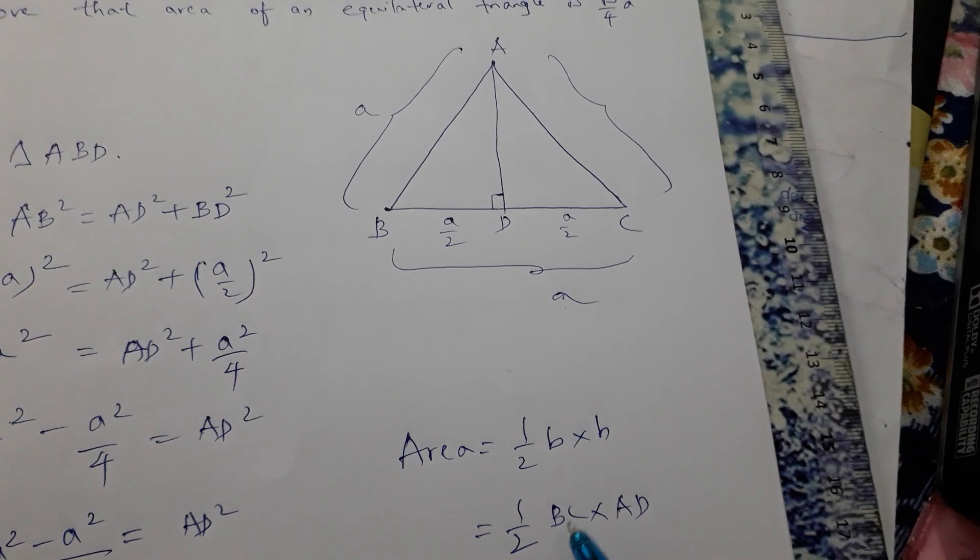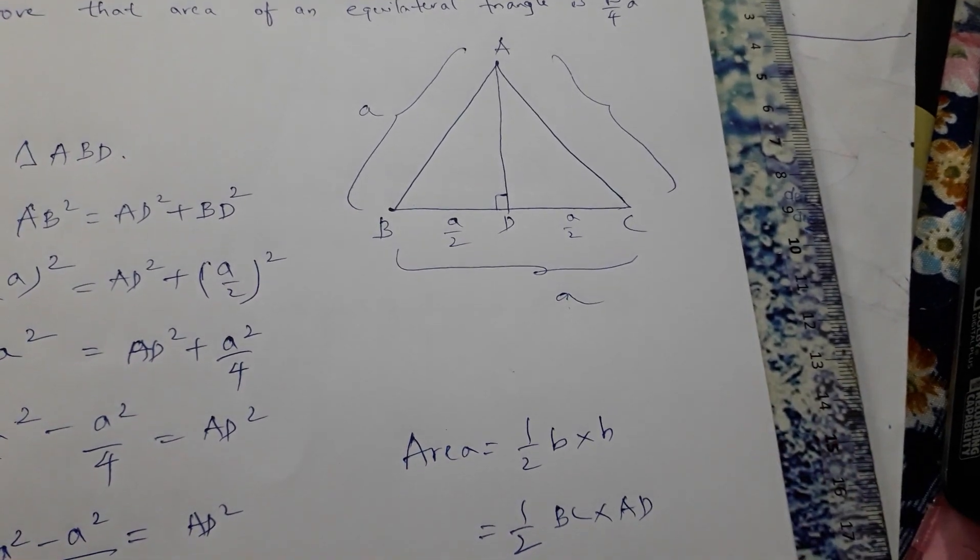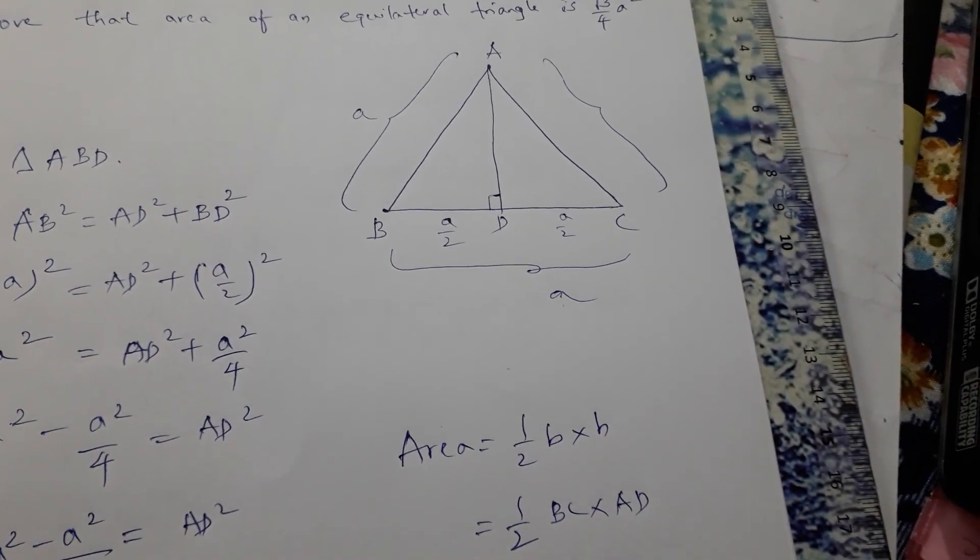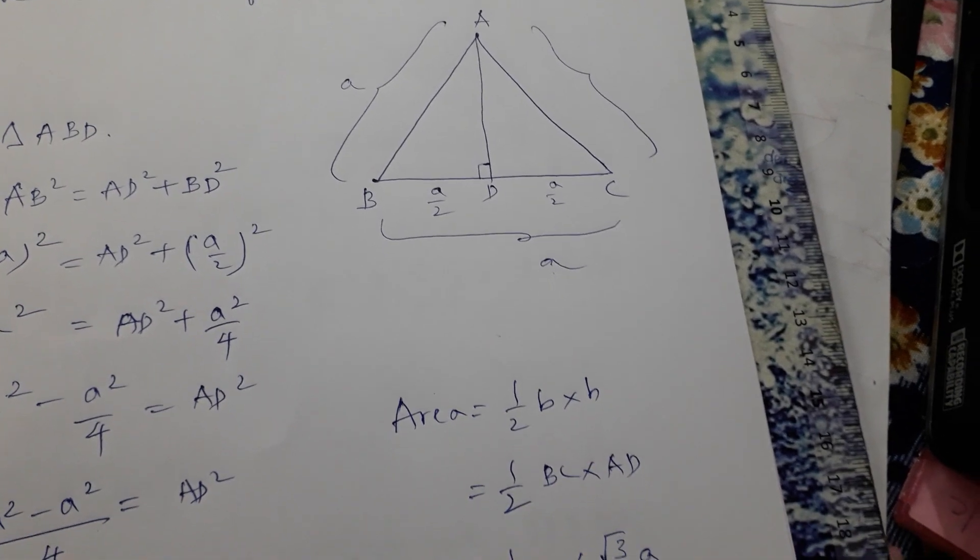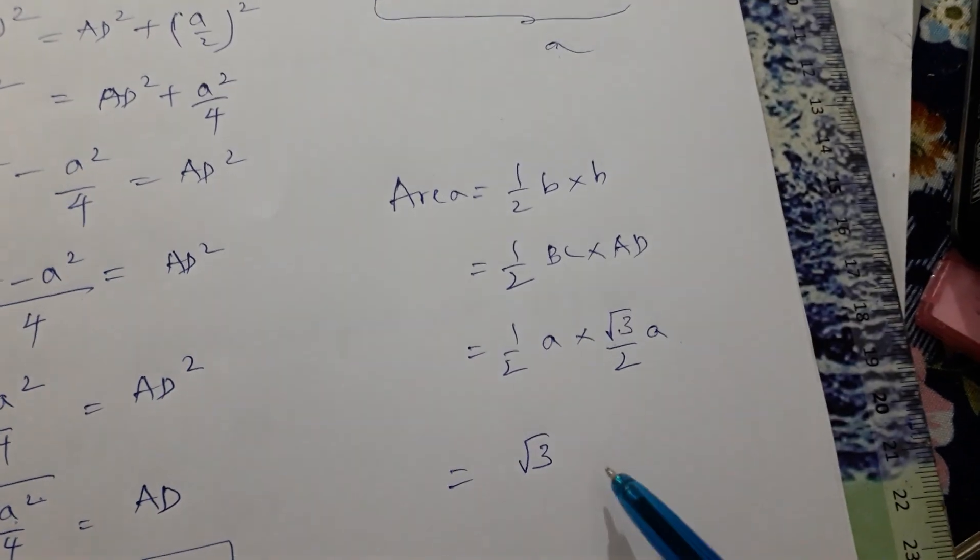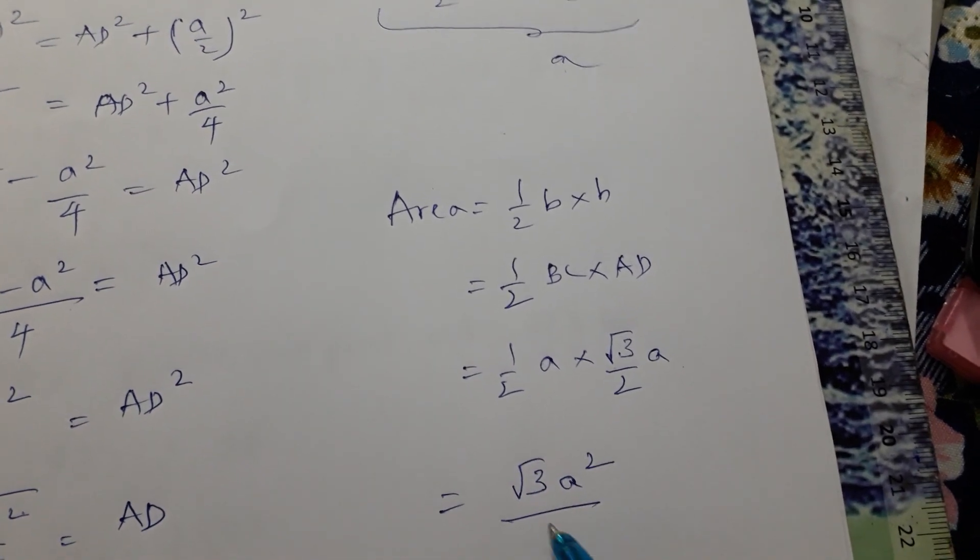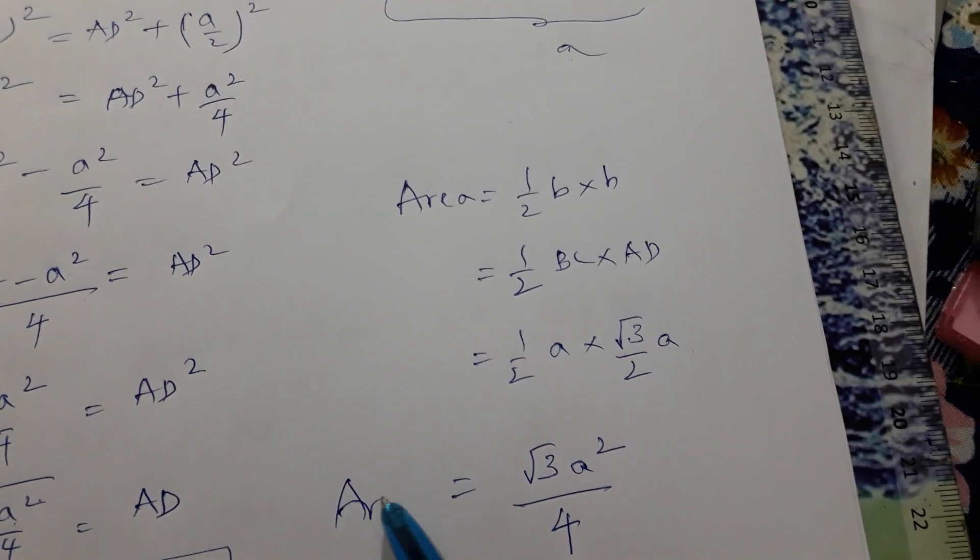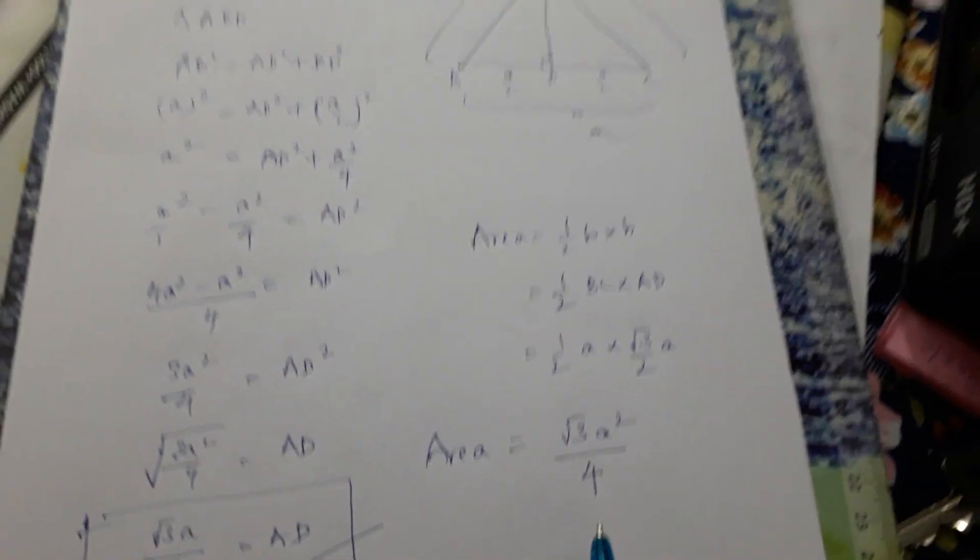So the answer is half. Base BC is A, AD is root 3 by 2A. Root 3A into A by 2 into 2 is 4. This is the area of an equilateral triangle.